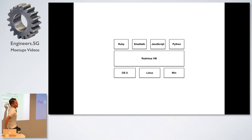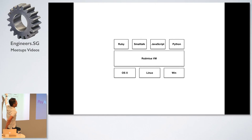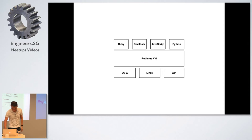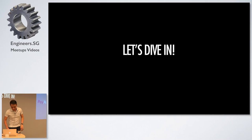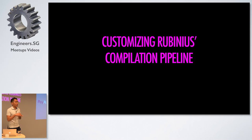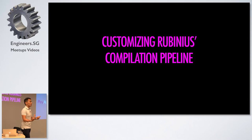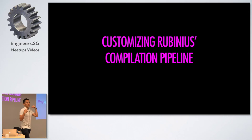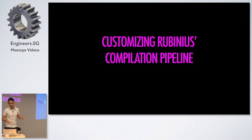This is similar to the JVM — the Java virtual machine — where you can run Clojure, Java, Scala, Groovy, Kotlin, whatever. We're going to write a language on top of Rubinius's virtual machine. Since it's a language platform, we can customize the compiler pipeline very easily — something we can't do in MRI.